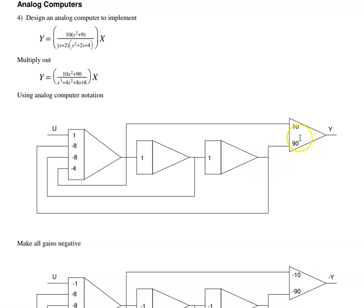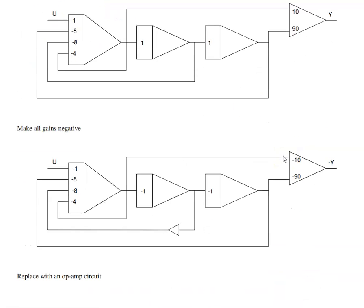The output, then, is 90 times this guy plus 10 times the second derivative. So, this is x, sx, s squared x. Add those together. Once I get the circuit in the analog computer notation, make all the signs negative, and occasionally I have to throw in an inverter to keep all the signs negative.